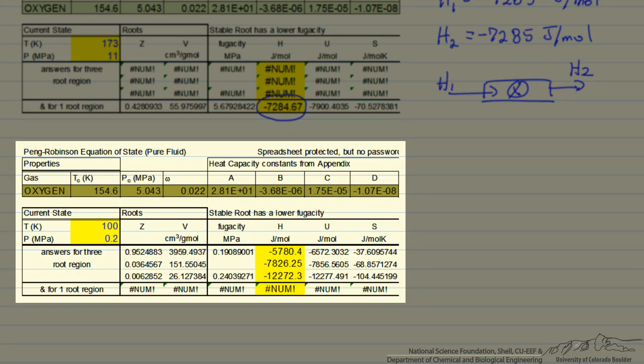So here is the spreadsheet where we put in the pressure, 2 bar or 2 tenths of a megapascal, and I guess the temperature of 100. And now we're in the three-solution region, but the correct solution in the equation of state is the one with the lower fugacity. So the fugacity is lower here. That says we're in the vapor phase, and this is the enthalpy. Of course, that's higher than our value of minus 7,285, so that means we need to go to a lower temperature.